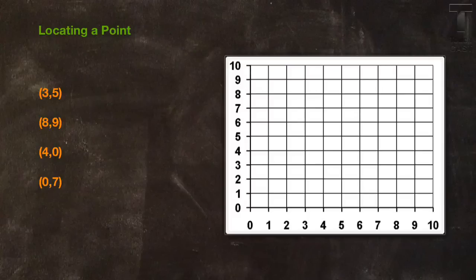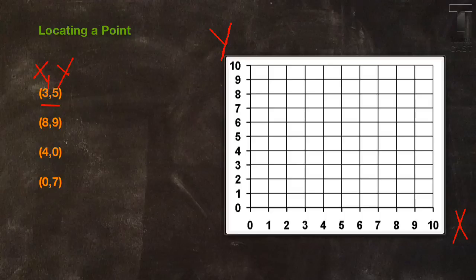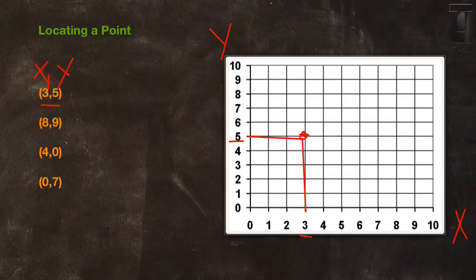Whenever we're looking at points, you have to remember that you must crawl before you can walk. So let's practice actually locating some points. Here we have (3, 5) — remember the 3 is the x and the 5 is the y. So we need to find our axes on our grid: this is the x-axis, this is the y-axis. We find 3 on the x-axis, right here, then 5 on the y-axis, and then we're just going to find the point where these two intersect, which would be right here.